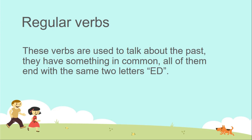These verbs are used to talk about the past. They have something in common — all of them end with the same two letters: E and D. Los verbos regulares son verbos que se usan para hablar del pasado. Ellos tienen algo en común, y es que todos ellos terminan con las mismas dos letras: la E y la D.